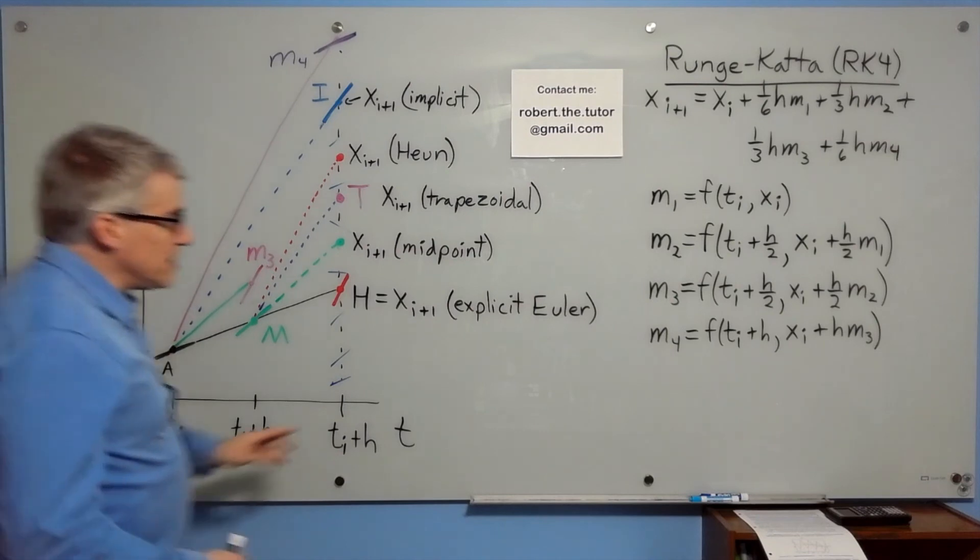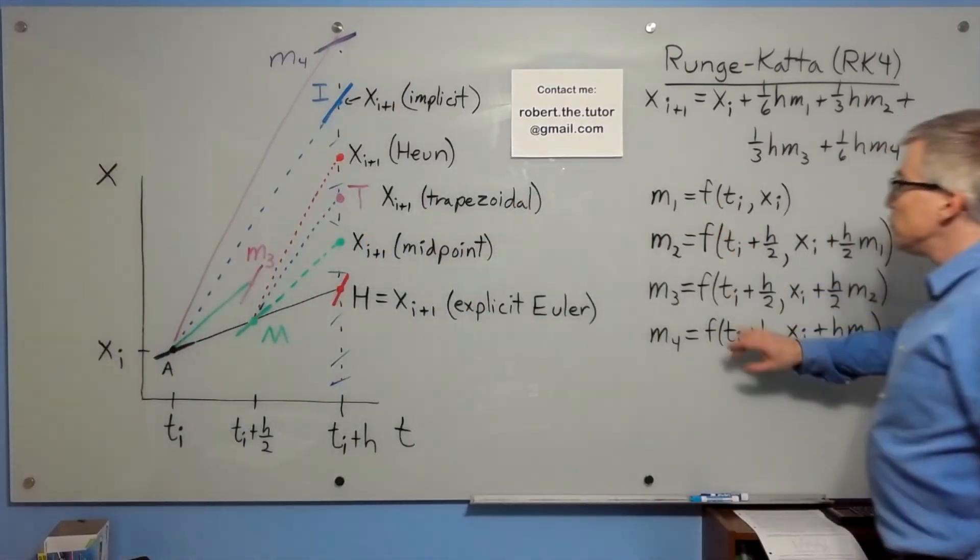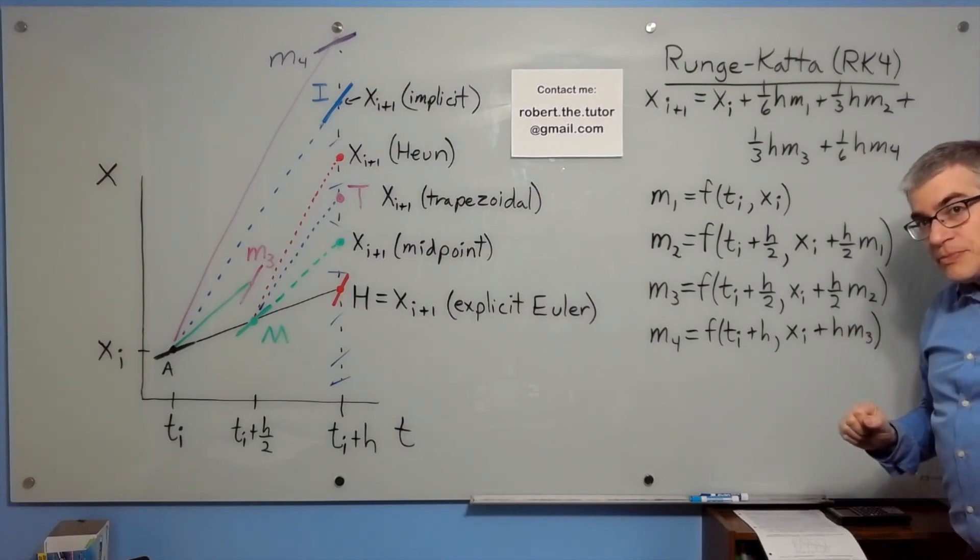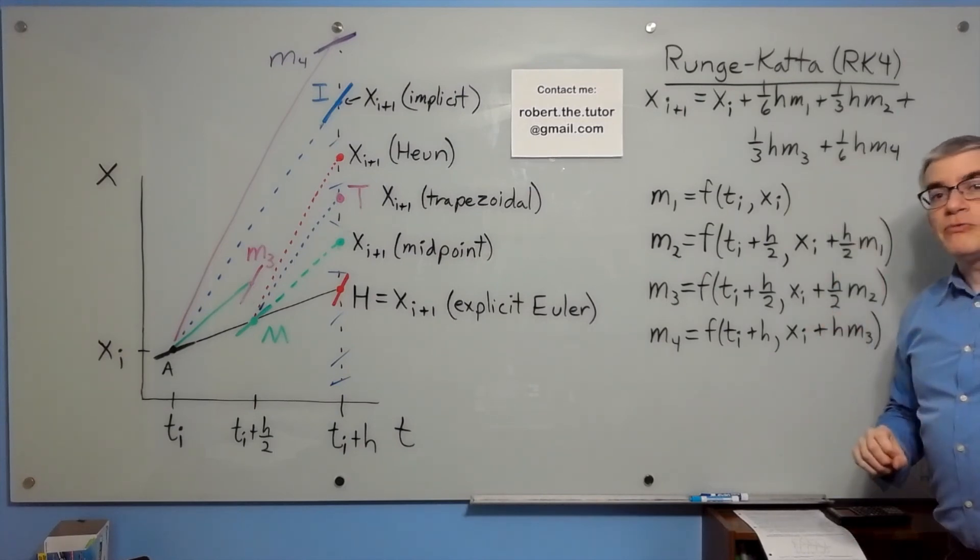And then slopes 1, 2, 3, and 4 get put together in sort of a weighted average here. And that would give you the Runge-Kutta estimate.